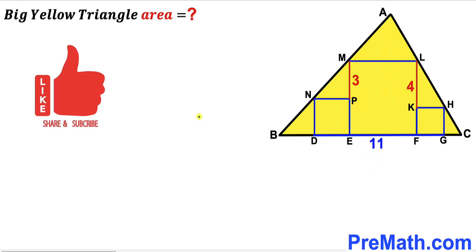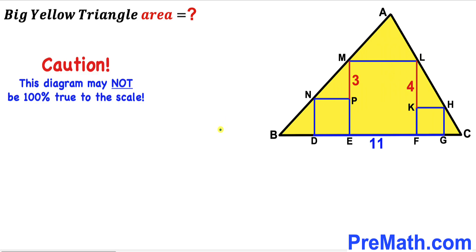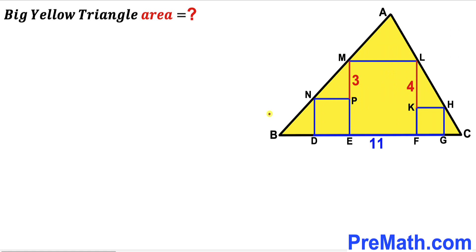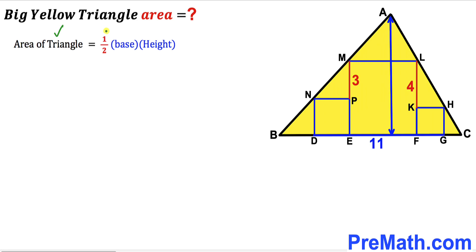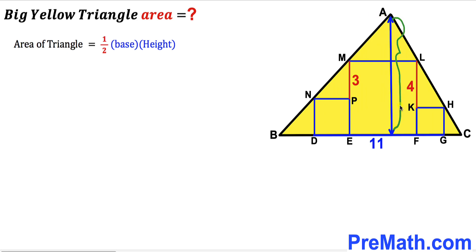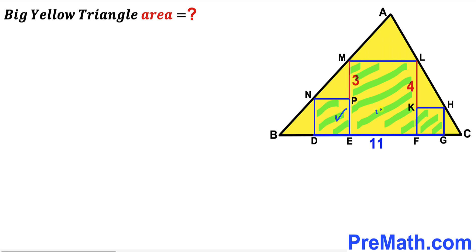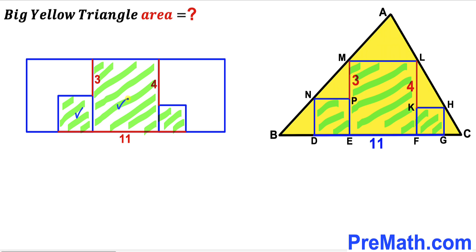Please don't forget to give a thumbs up and subscribe, and keep in mind that this figure may not be 100% true to scale. Let's get started. Since we are interested in calculating the area of this big yellow triangle ABC, let's recall the area of a triangle formula: area equals one half times base times height. Here BC is the base and we need to find both the base and the height.